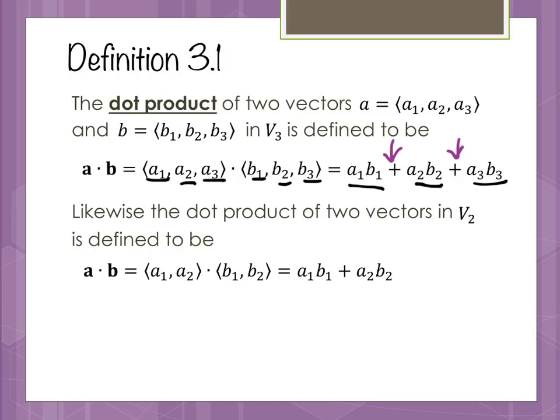An interesting thing to realize is that this actually gives me a scalar — I get a number out of this. Every other operation I've done with vectors so far, if I started with a vector, I ended with a vector. In this case I don't — I end up with a scalar when I'm done. Likewise, we could two-dimensionalize this idea of a dot product: you get a1 times b1 plus a2 times b2, and again you get a scalar out of that.